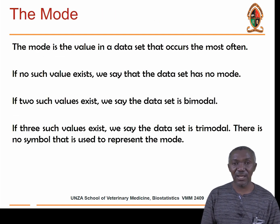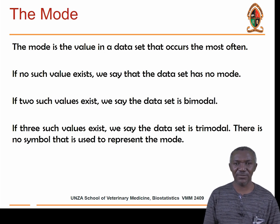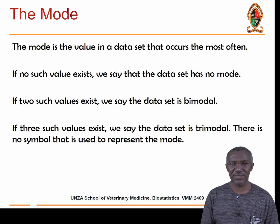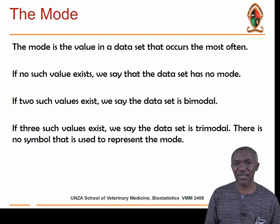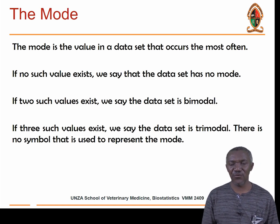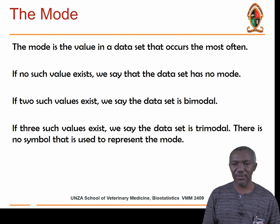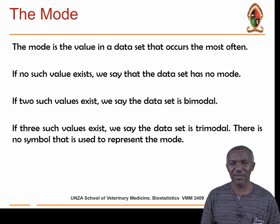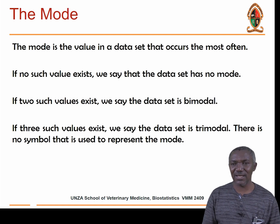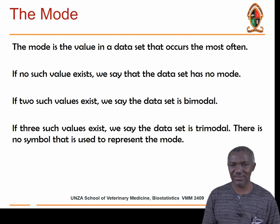The other measure of central tendency is the mode. The mode is the value in the dataset that occurs most frequently. If no such value exists, we say the data has no mode. For example, if measuring the height of 100 persons, the mode is the height that the majority of persons have — the most commonly observed height.